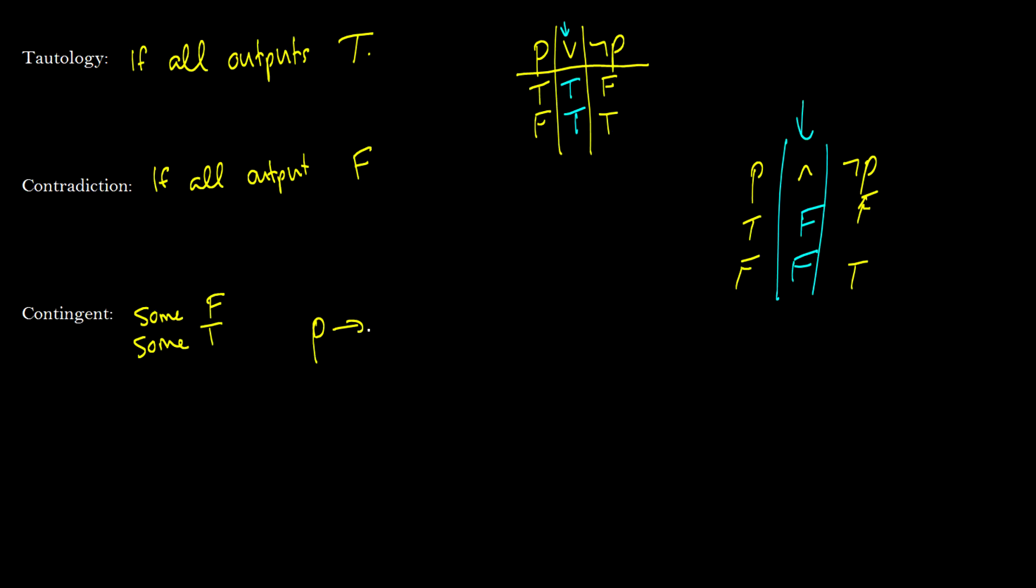And a contingency is sum F sum T. So most formulas you look at are going to be contingent because it's just a mix. So if we have P arrow Q, really any of the truth tables we've done so far, we know that this is true in three circumstances and false in one other. So this is a contingent statement.